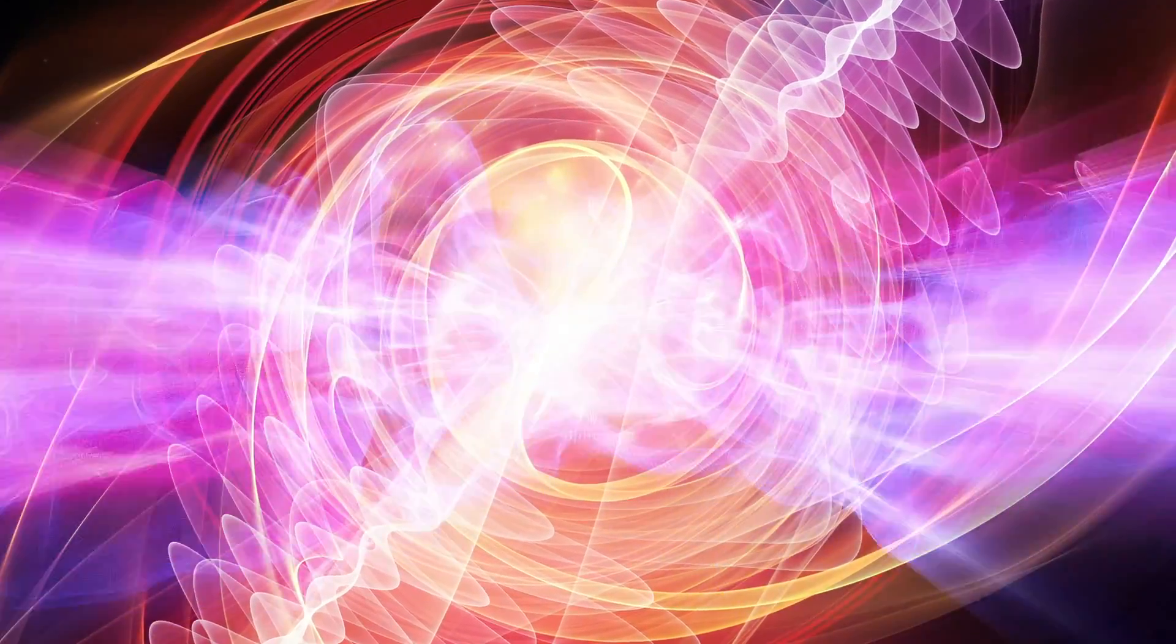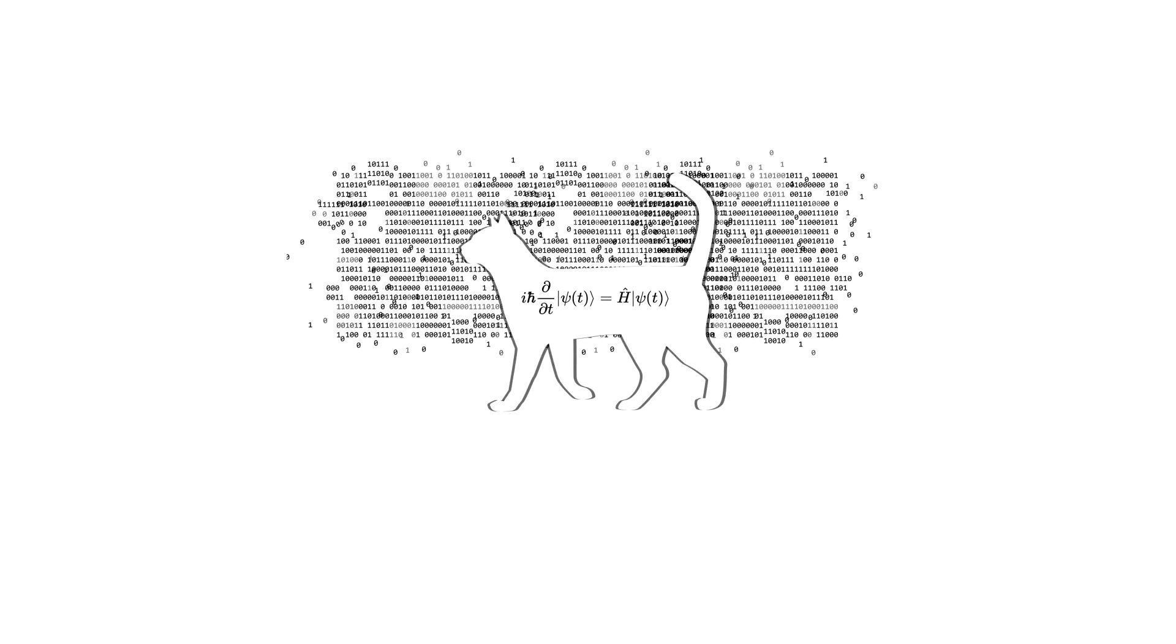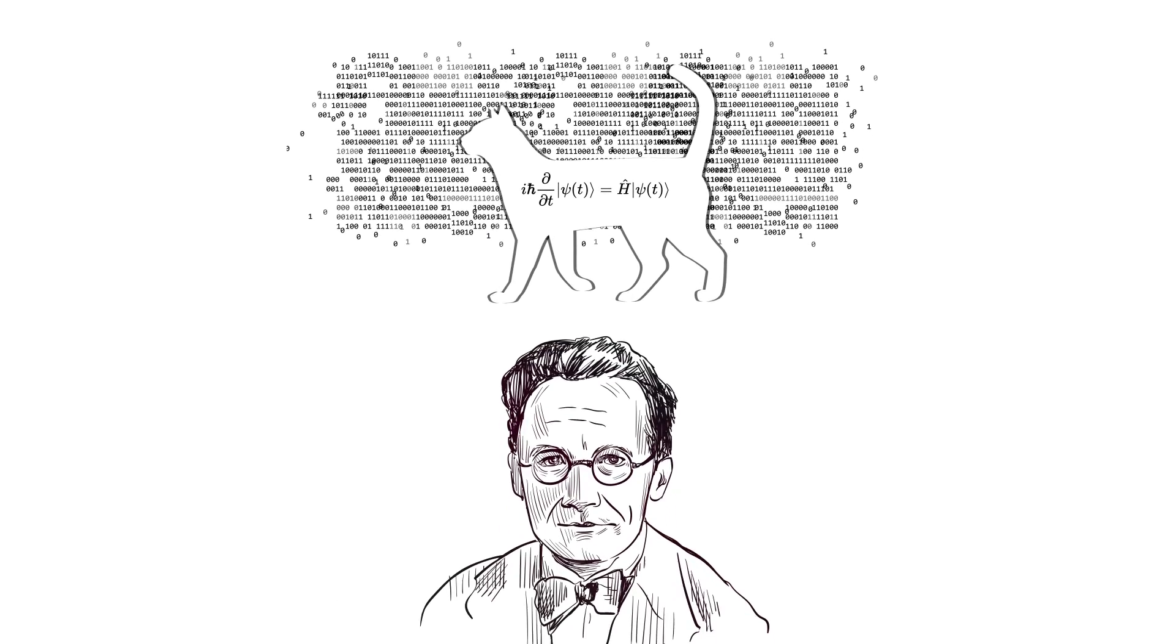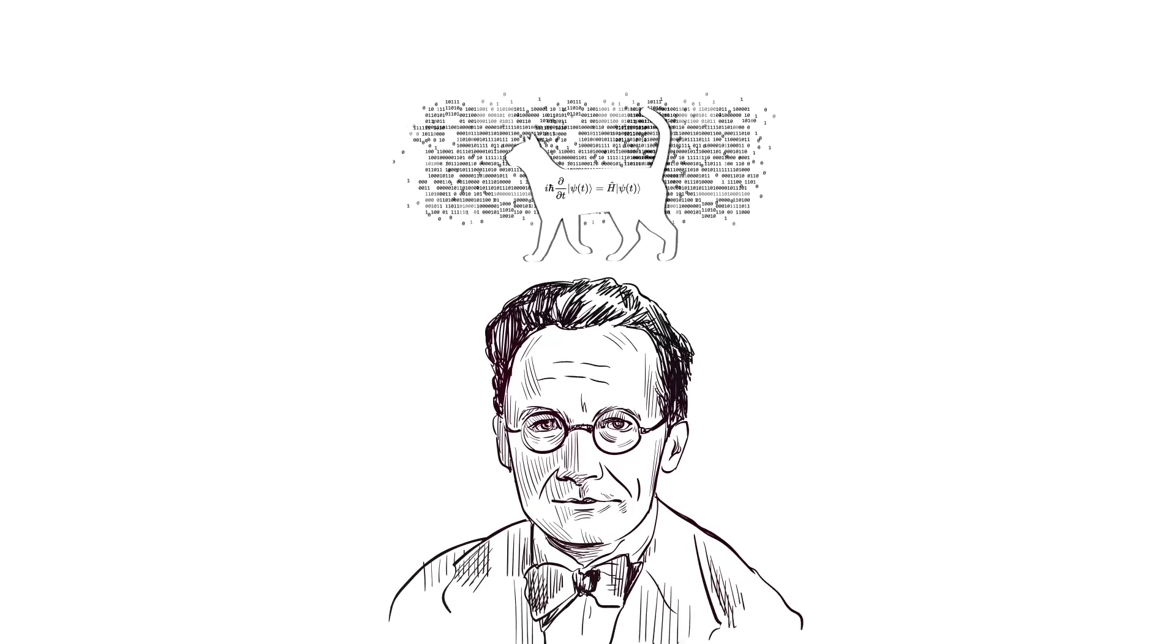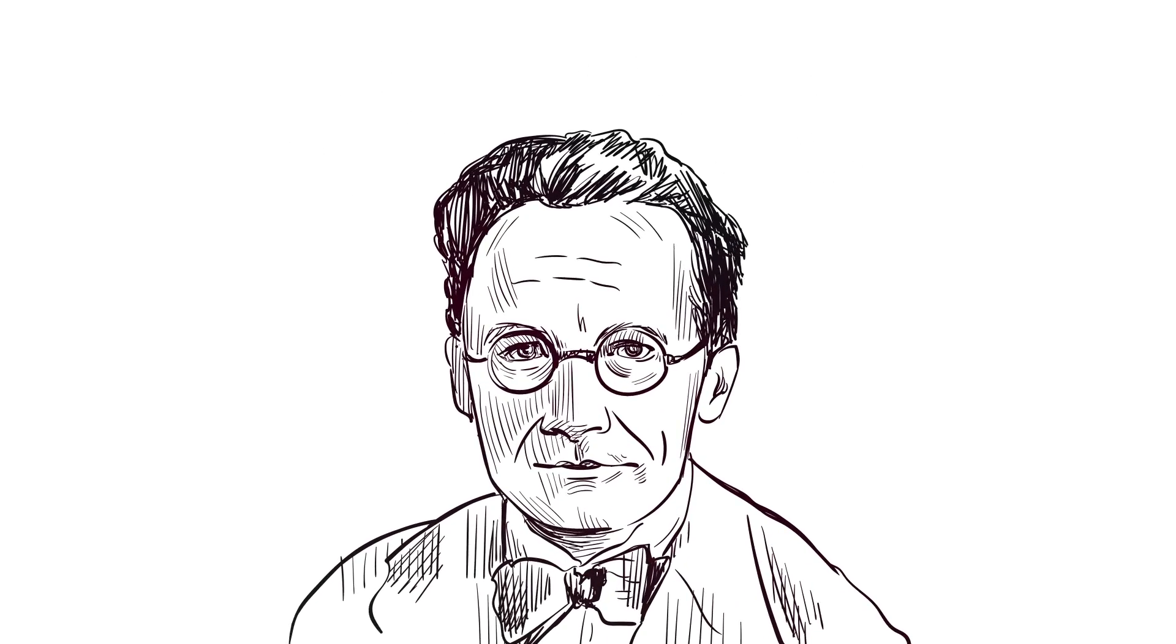They said, sure, wave functions for electrons or whatever, they obey the Schrodinger equation when you're not looking at them. But when you measure a quantum mechanical system, its wave function suddenly and unpredictably changes.